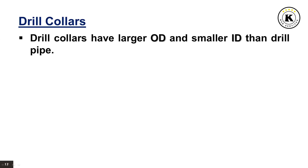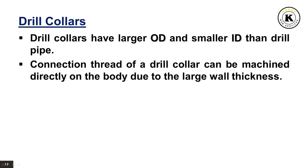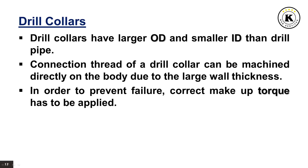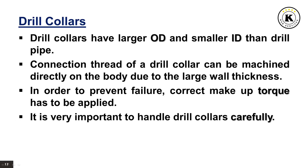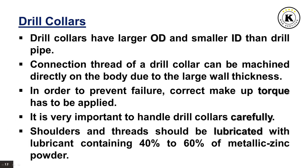Drill collars have a larger outer diameter and smaller inner diameter than drill pipe. The connection thread of a drill collar can be machined directly on the body due to the large wall thickness. In order to prevent failure, correct makeup torque has to be applied. It is very important to handle drill collars carefully; shoulders and threads should be lubricated with a lubricant containing 40% to 60% metallic zinc powder.